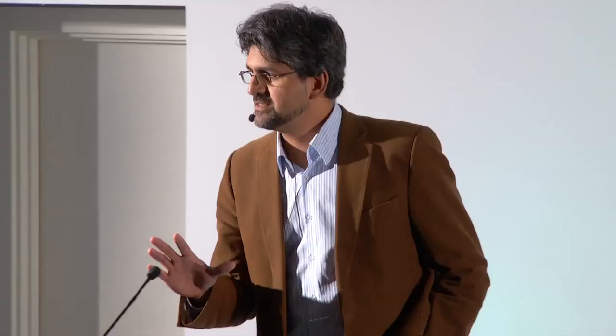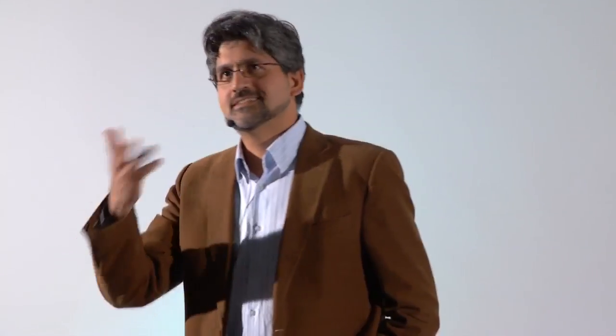So it turns out that some observations could be made to help make this problem solvable. So the first one is that when things move, they don't change colour very much. So when I move from here to here in this scene, I don't change colour very much. And another thing is that because of the arrangement of the cameras, the motion is quite smooth. So the motion from one frame to the other is not much different from that frame to the next frame. So it turns out that it's great,